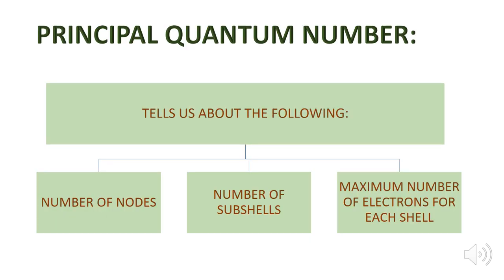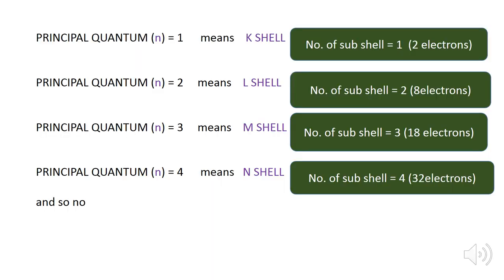The principal quantum number tells us about the number of nodes, number of subshells, and the maximum number of electrons for each shell. When n equals one, we are talking about the K shell; the number of subshells is one, and the maximum number of electrons is two. When n equals two, we are talking about the L shell; the number of subshells is two, and the maximum number of electrons is eight.